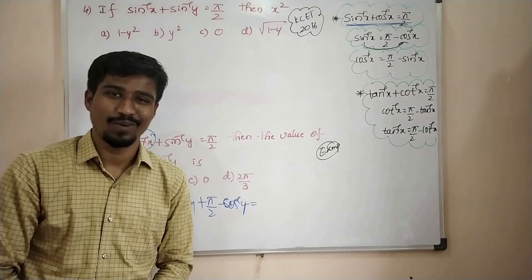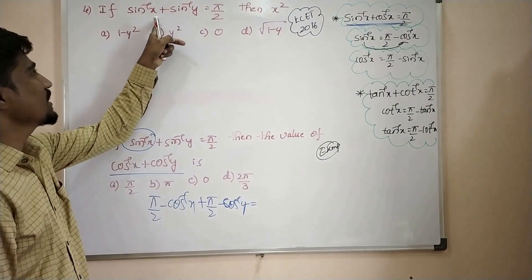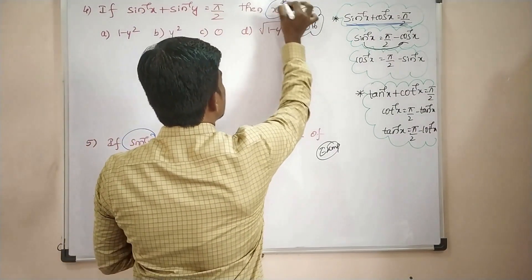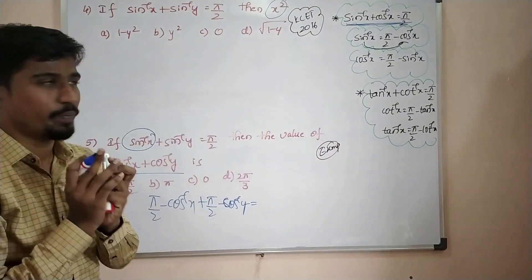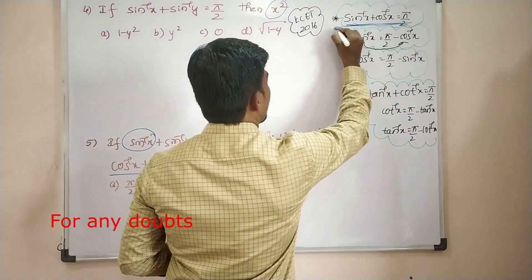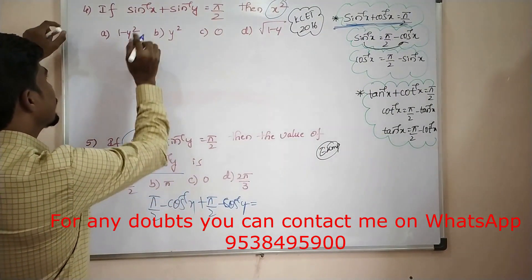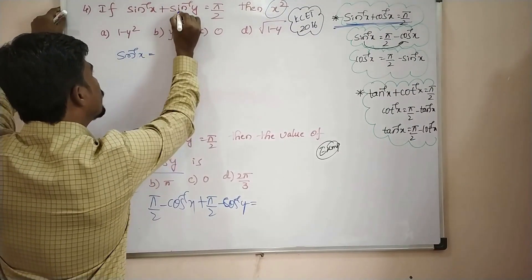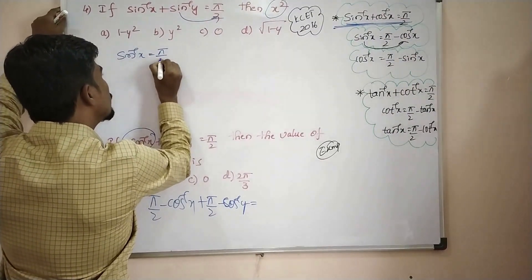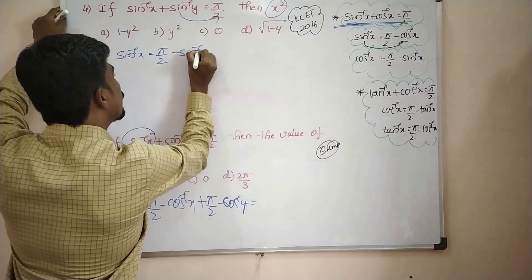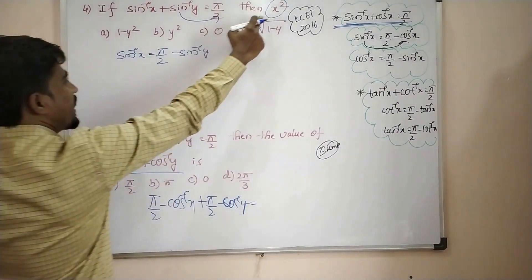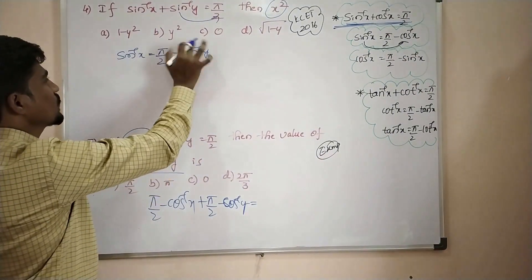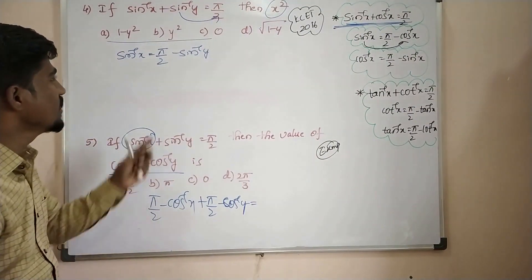Your next problem: if sin⁻¹x + sin⁻¹y = π/2, then find x². This question was asked in KCB 2016. Based on this property — very important, very simple. sin⁻¹x = π/2 − sin⁻¹y = cos⁻¹y. We shift the x-value. RHS has all options in terms of y.